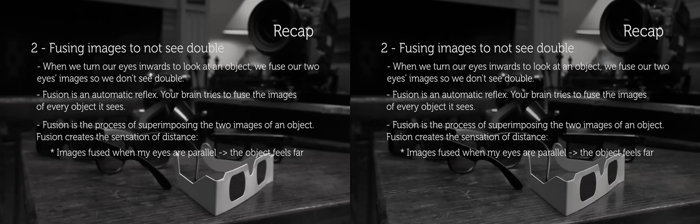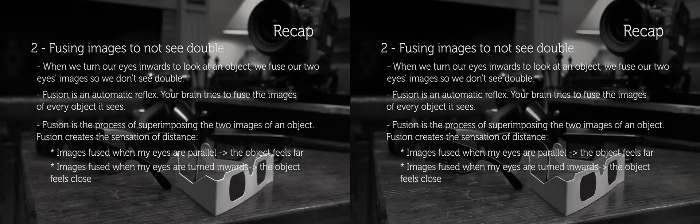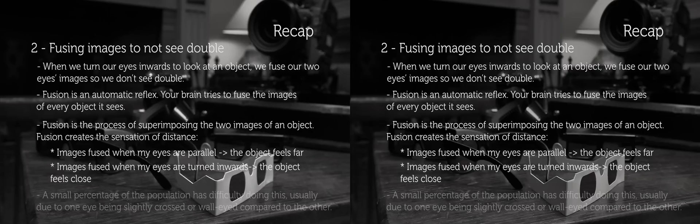When images from my eyes are parallel, the object feels far. When images from my eyes are turned inwards, the object appears close. A small percentage of the population has difficulty doing this, usually due to one eye being slightly crossed or wall-eyed compared to the other.